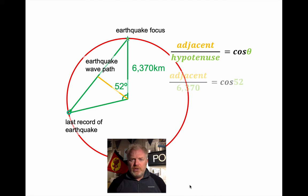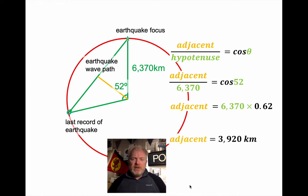We know some numbers, let's put those in. So it's the adjacent divided by 6,370 is going to equal the cos of 52. So that line, the adjacent, the thickness of the core should be 6,370 times 0.62. Which gives us a thickness of 3,920 kilometers.